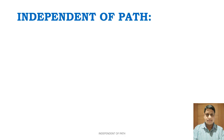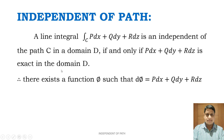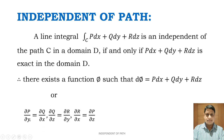What is independent of path? A line integral ∫_C P dx + Q dy + R dz is independent of path C in a domain D if and only if P dx + Q dy + R dz is exact in the domain D. Therefore there exists a function φ such that dφ = P dx + Q dy + R dz, or equivalently: ∂P/∂y = ∂Q/∂x, ∂Q/∂z = ∂R/∂y, and ∂R/∂x = ∂P/∂z.